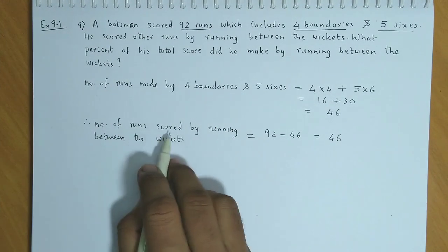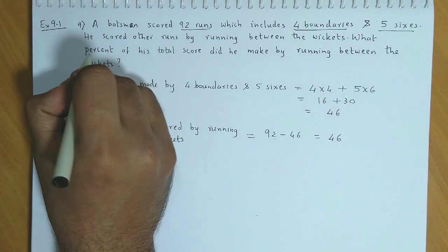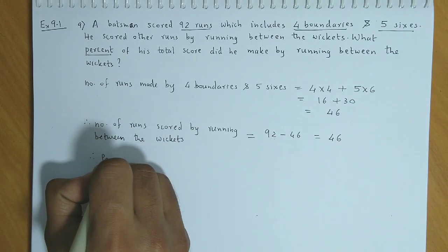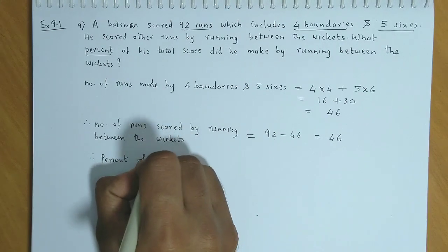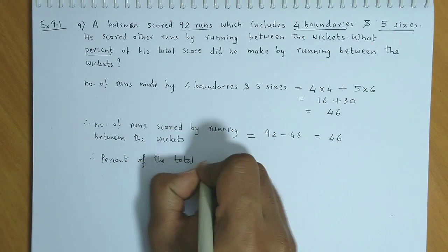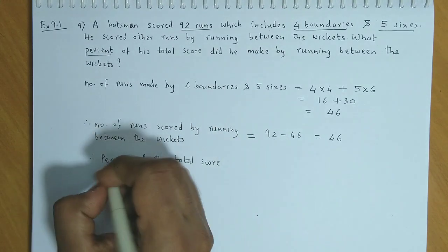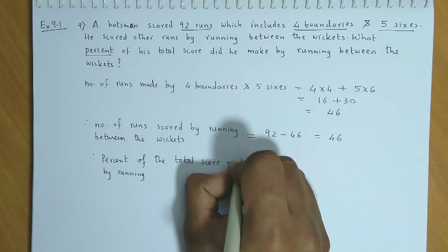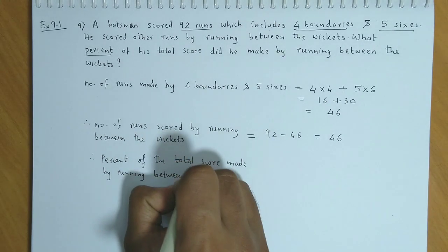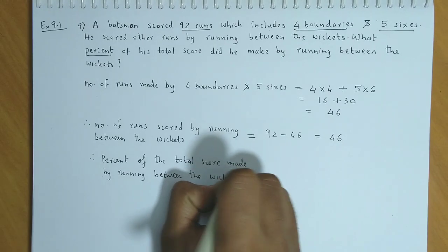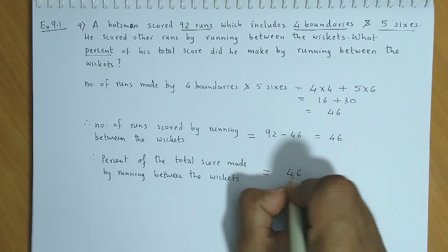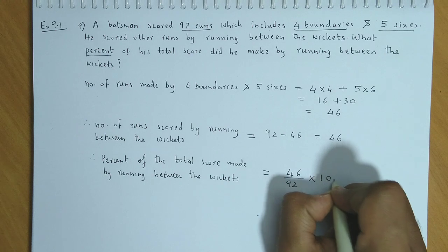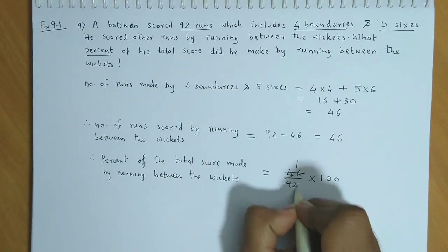We have the number of runs scored by running between the wickets, but we need the percentage, so we convert. The percent of the total score made by running between the wickets is equal to 46 runs out of 92, multiplied by 100.